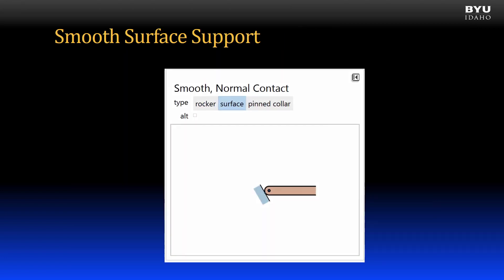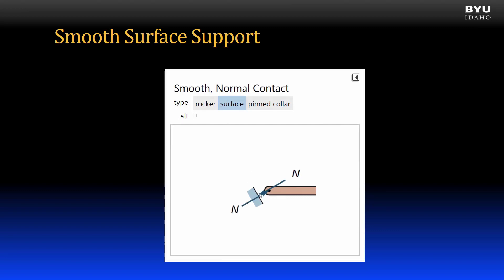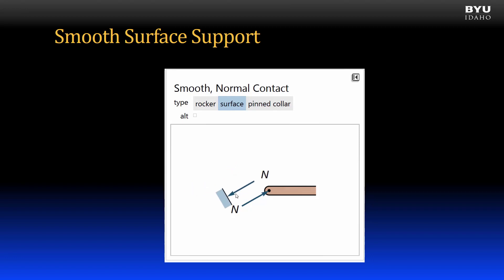Let's first look at a smooth surface support. The body can slide up or down the surface but cannot penetrate the surface. We would model this type of support as a single force in a direction normal to the plane of the surface. The end of the body is free to rotate, so there is no moment reaction. Note that the body could potentially lift off the surface, so we only get a push against the surface, but cannot pull against it.